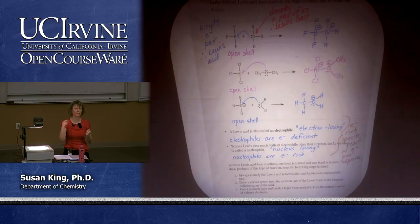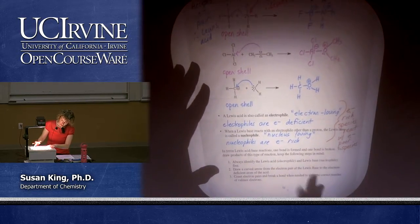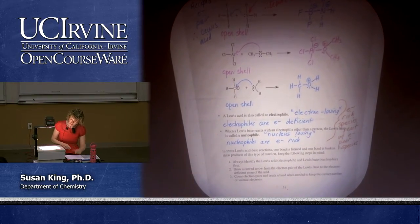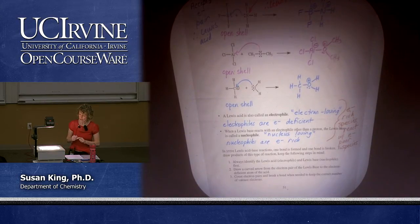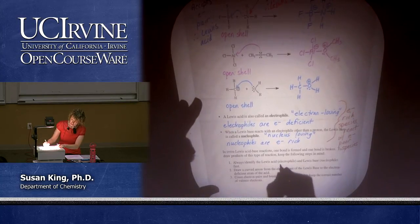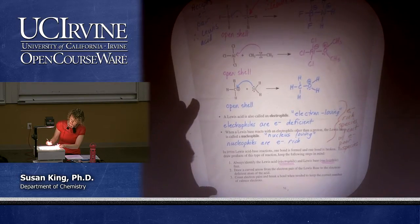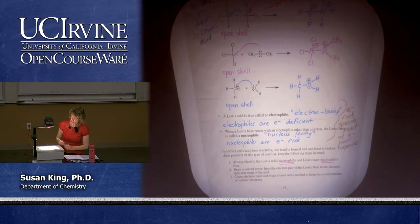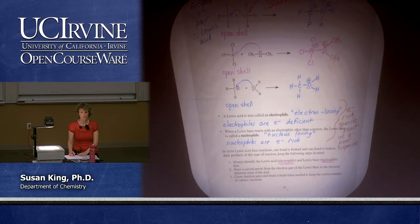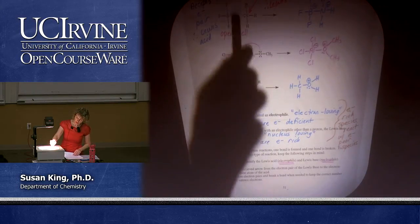The nucleophiles — the rich — give to the poor. In some Lewis acid-base reactions, one bond is formed and one bond is broken. To draw products of this type of reaction, always identify the Lewis acid or electrophile and the Lewis base or nucleophile. Draw a curved arrow from the electron pair of the Lewis base to the electron-deficient atom of the acid. Count electron pairs and break a bond when needed to keep the correct number of valence electrons — the same idea as resonance structures.